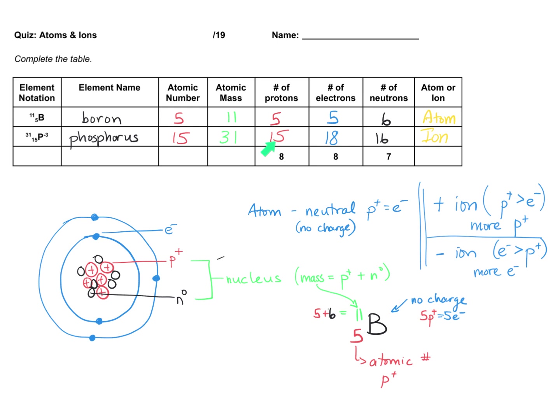Then I've got to bump that up to 18. So now we can see I have 15 positives and 18 negatives. So there's 3 more negatives, which makes sense for this negative 3 charge.